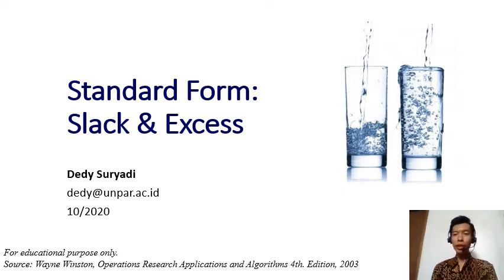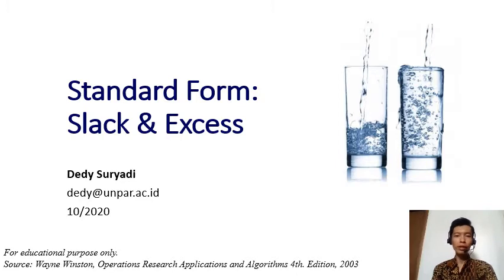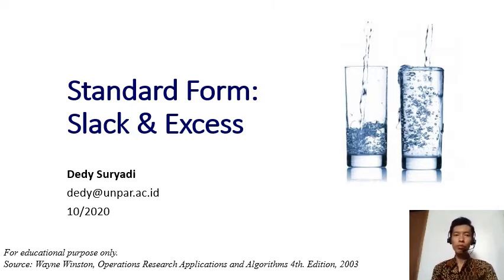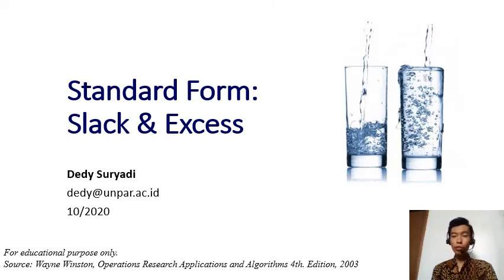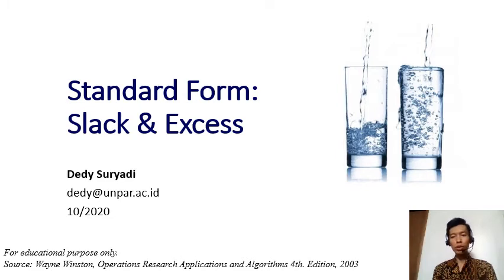Hello and welcome to the second big topic in our Operations Research 1 course. In the first three weeks you've learned about how to formulate a real-world problem into a linear programming problem, but you have not learned how to solve a linear programming problem with more than two variables. Now we are going to talk about an algorithm called the simplex algorithm, but before we get to the algorithm itself there are some terms and special forms we need to discuss.